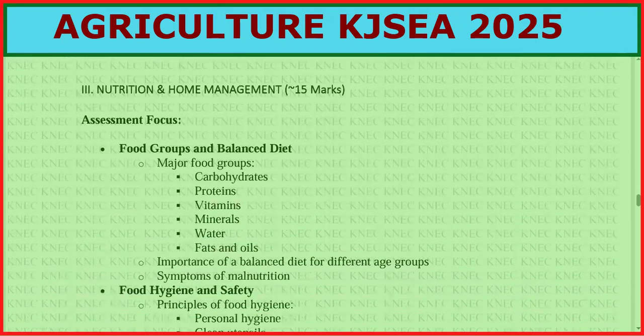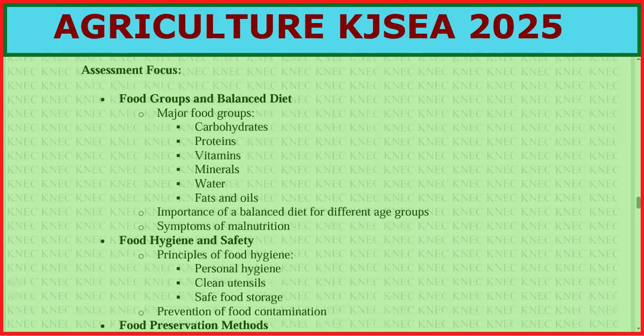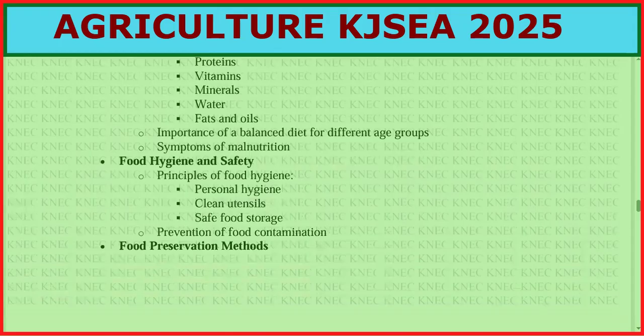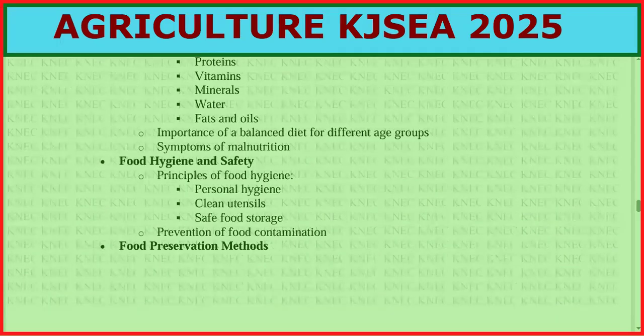Nutrition and home management is worth 15 marks. Cover food groups and balanced diet: major food groups include carbohydrates, proteins, vitamins, minerals, water, fats and oils. Also cover the importance of balanced diet for different age groups, symptoms of malnutrition, and principles of food hygiene including personal hygiene and clean utensils.